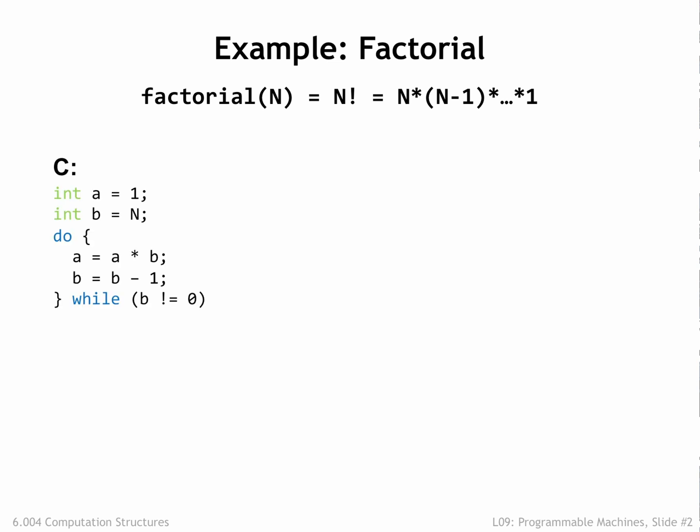We can use a programming language like C to describe the sequence of operations necessary to perform the factorial computation. In this program there are two variables, a and b. a is used to accumulate the answer as we compute it step by step. b is used to hold the next value we need to multiply. b starts with the value of the numeric argument n.